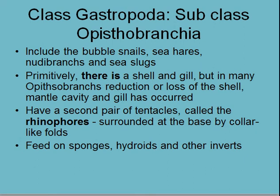A subclass of Opisthobranchia includes bubble snails, sea hares, nudibranchs, and sea slugs — another subclass of gastropods. Generally these things don't have a shell, but a few do, though they tend to be very reduced. These ones have a second pair of tentacles called rhinophores, which we'll look at more closely — they're surrounded at the base by little folds, which is one of the diagnostic features. They tend to be grazers on sponges, hydroids, and other invertebrates, which have nasty chemical defenses and nematocytes, so these animals have specializations for feeding on these dangerous, toxic organisms.